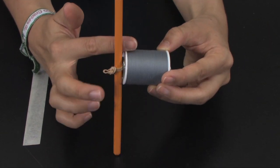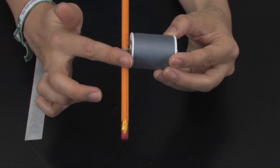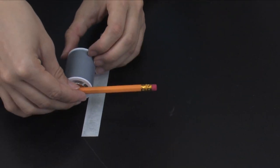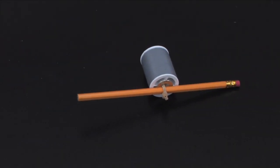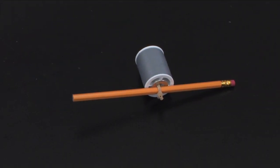Students will add energy to the spool racer by winding the pencil six times and set the racer on a flat surface at the starting line. They will then release the pencil and their racer should take off. That ends the practice trial.